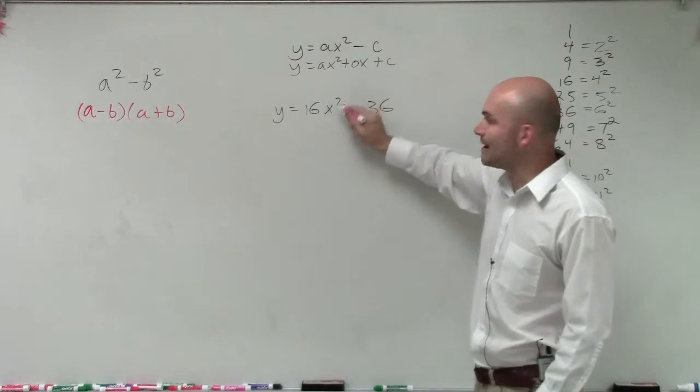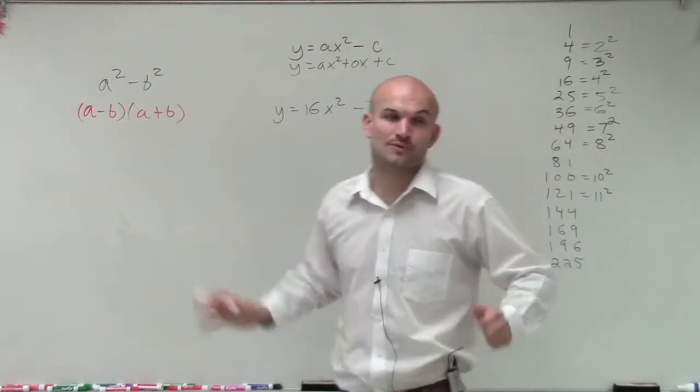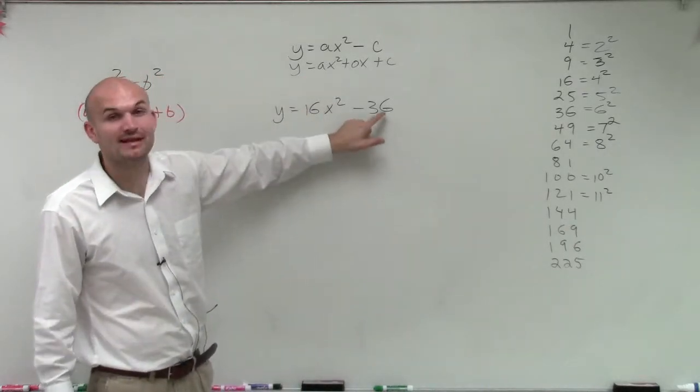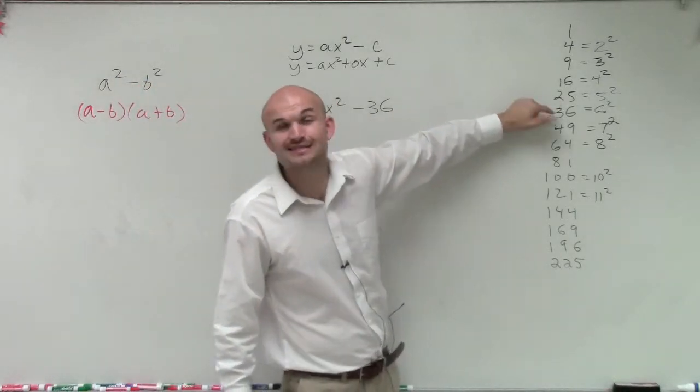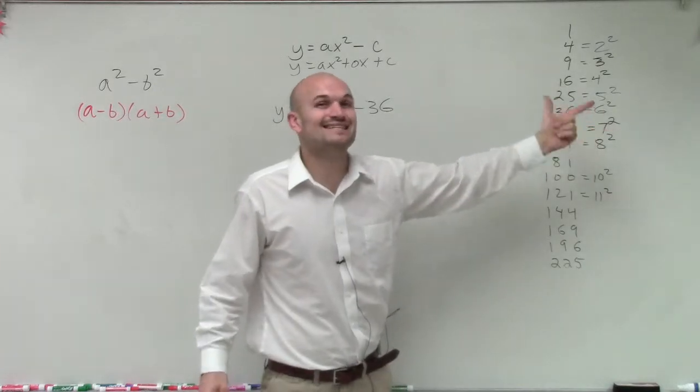So right now, I need to determine, I know I have an x squared, but I need to have a term squared minus another term squared. So what I want to do is determine, can I rewrite this as a term squared? And can I rewrite 36 as a number squared? Well, fortunately for me, I know 36 is a square number because I wrote them all over here. So 36 can be rewritten as 6 squared.